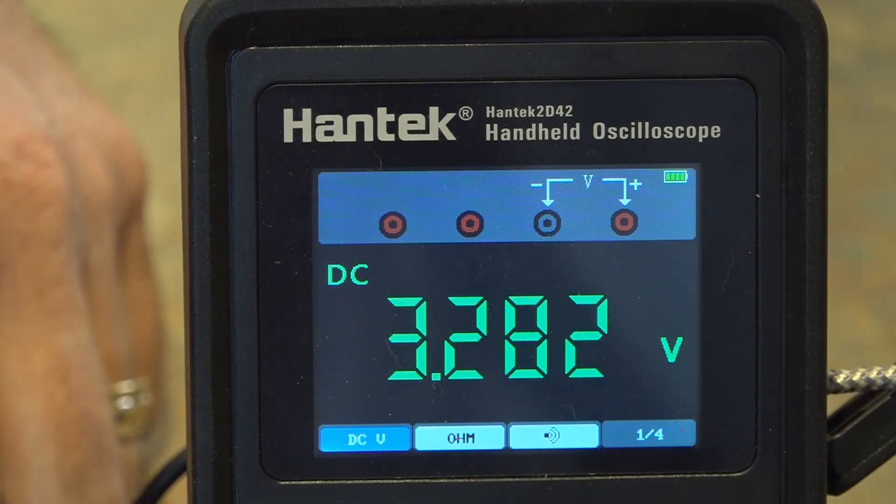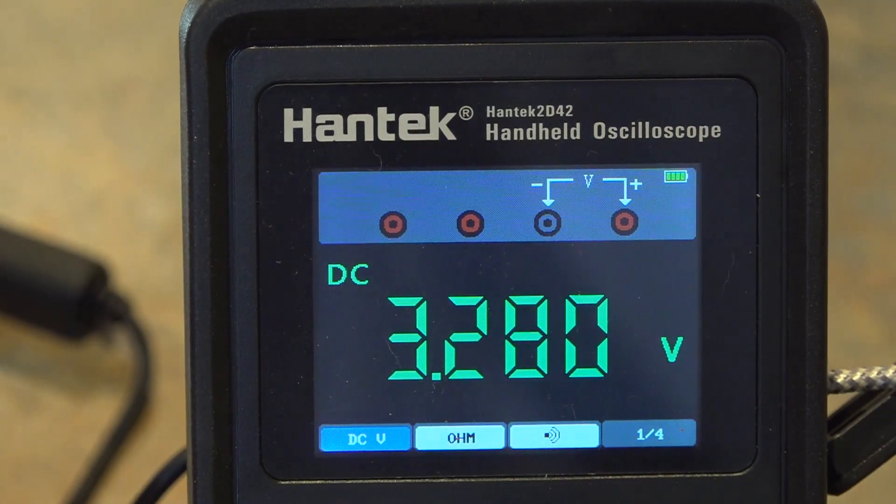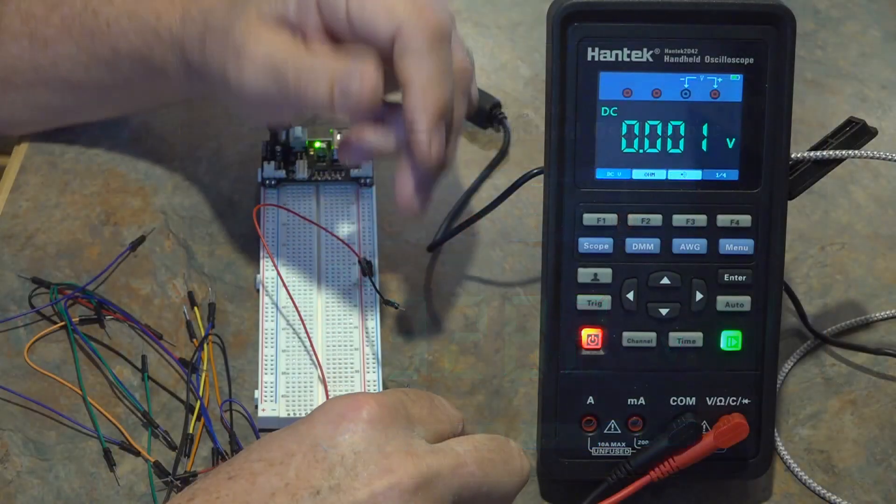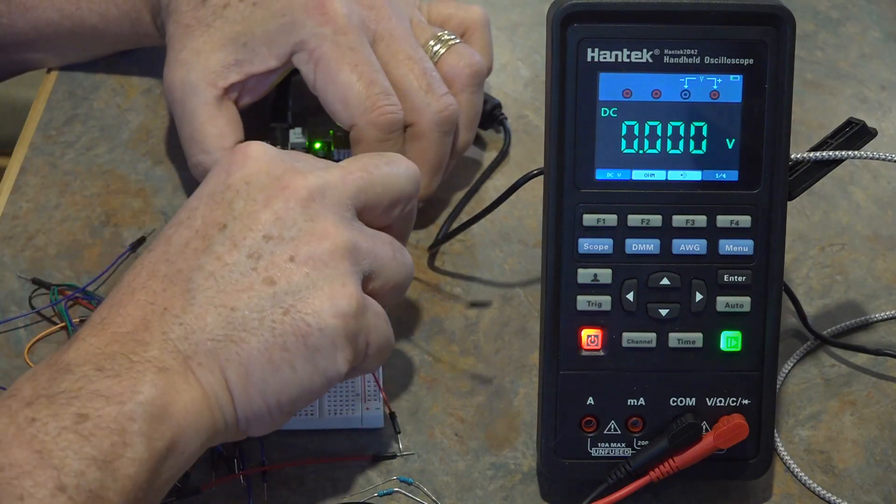And there we go that's about 3.28 volts there. Fluctuation on the third digit is normal. Keep in mind this is a relatively inexpensive device so the accuracy is not up there with the equipment we would have in the lab.